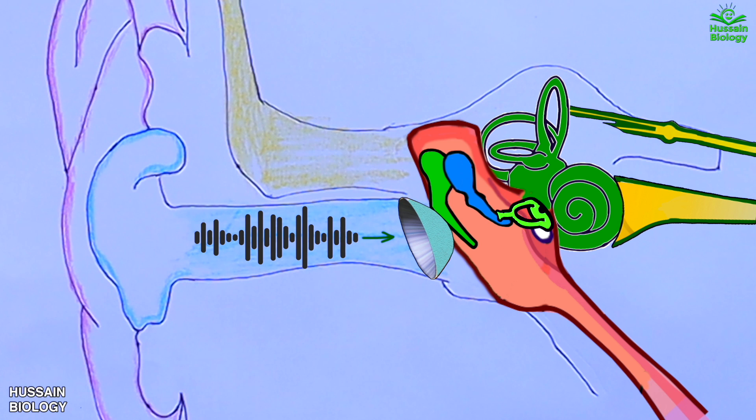The first ossicle to receive the sound wave is the malleus bone. It transmits the sound vibrations from the eardrum to the incus, and this incus then transmits vibrations to the stapes, which ultimately sends the sound energy to the inner ear through the oval window.